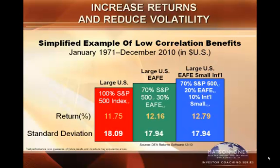Free market portfolio theory tells us that there's an efficient market hypothesis, which says that prices are rational, and modern portfolio theory, which shows us how to use correlation to create an investment portfolio with less risk and more return. Now let's check out the third component of free market portfolio theory — the three-factor model — in the next video.